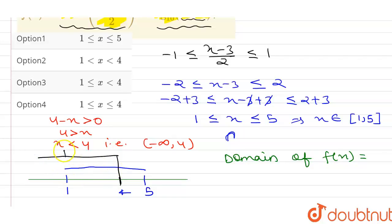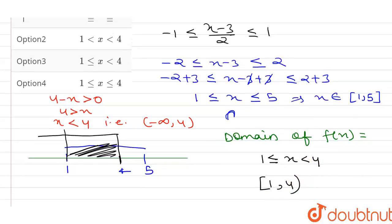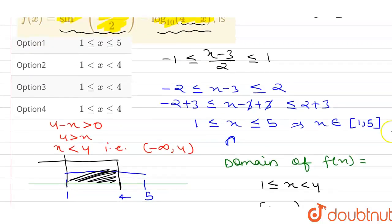The common part is from 1 to 4. Since 1 is included (closed interval) and 4 is not included (open interval, as there is no equality sign), the domain of f(x) is 1 ≤ x < 4, written as [1, 4). So the correct answer is option 3.